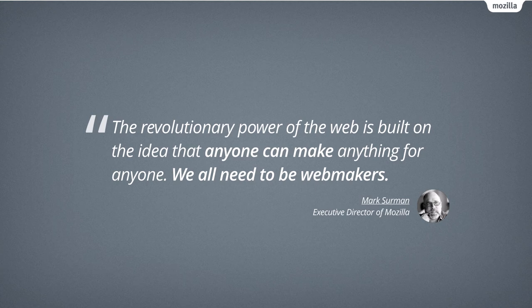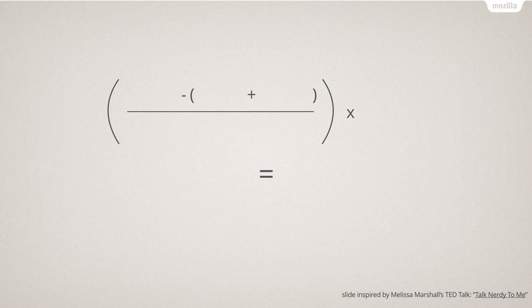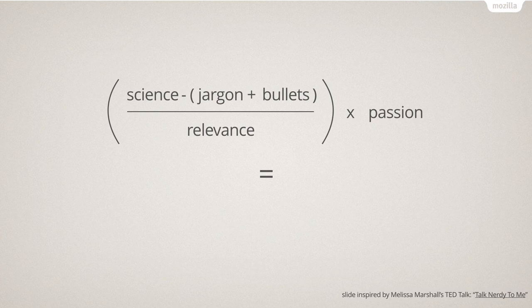I'm going to have one more slide for you, and it's an equation. I did steal this slide, but I've mentioned who it's from at the bottom and there's a link so you can go and watch the entire talk — it's on TED and it's really worth watching. It's pretty simple: take your science — your code and whatever — remove bullet points and jargon, divide by relevance, meaning only give the information that's useful, times it by your passion. You're sat in Brussels coming from goodness knows how far away because you're passionate about your project — represent that in your explanations. And that will equal better understanding. Better understanding means better participation, and that means moving people from the bottom of the curve towards the top and shallowing it out.